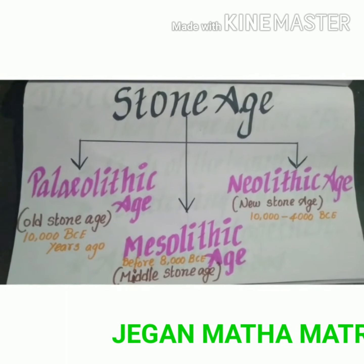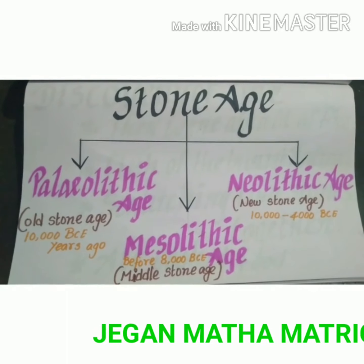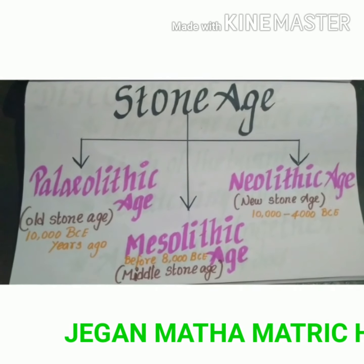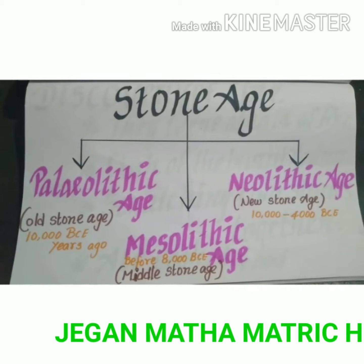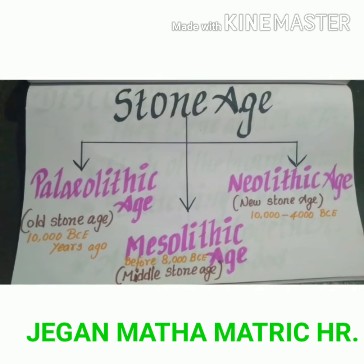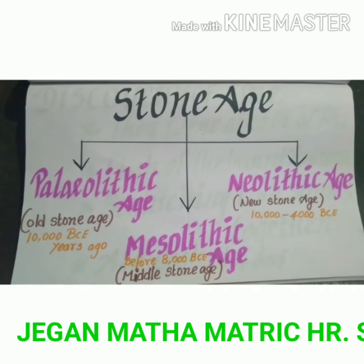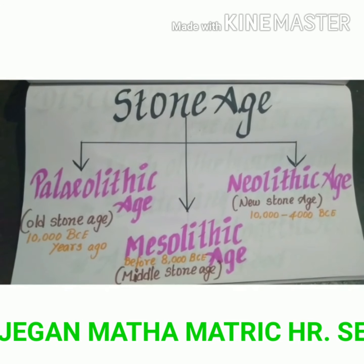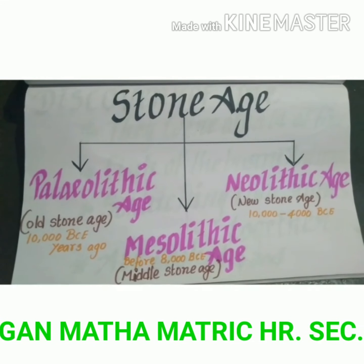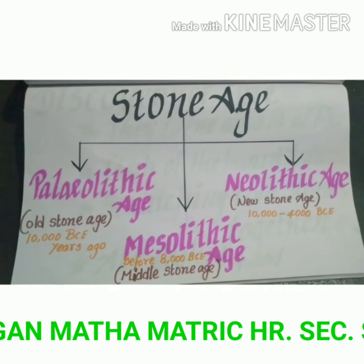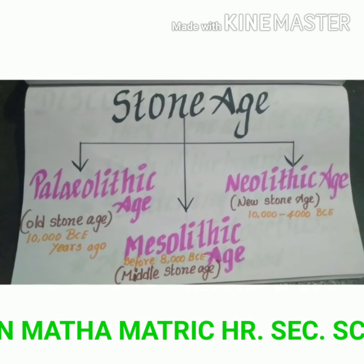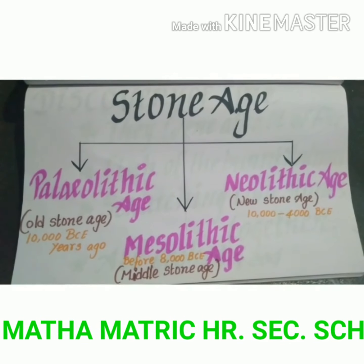The Stone Age can be divided into three ages. First, the Paleolithic Age, which means Old Stone Age. Second, the Mesolithic Age, which means Middle Stone Age. And third, the Neolithic Age, which means New Stone Age.